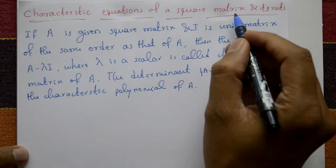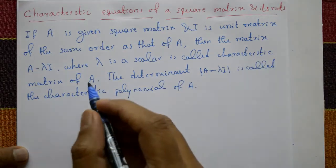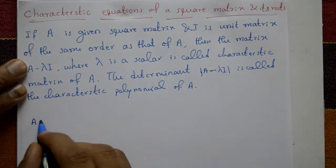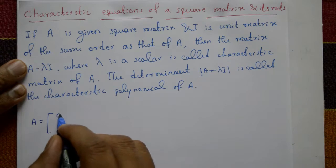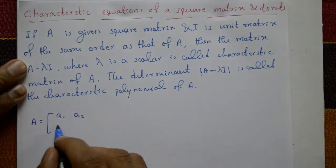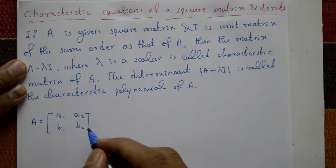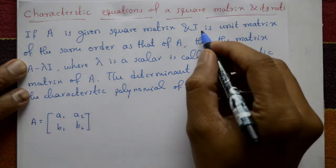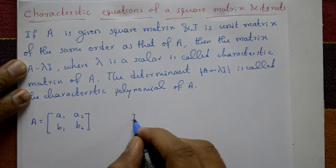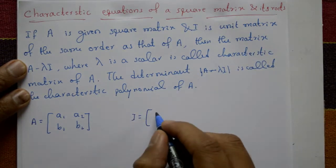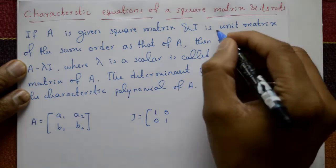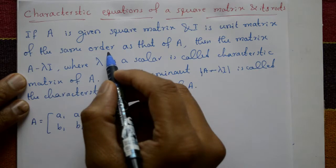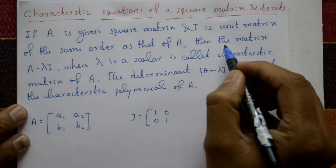The characteristic equation of a square matrix and its roots. If A is a given square matrix of order 2×2 or 3×3, and I is the unit matrix of the same order as A — for example, I equals [1, 0; 0, 1] — then we proceed to define the characteristic matrix.